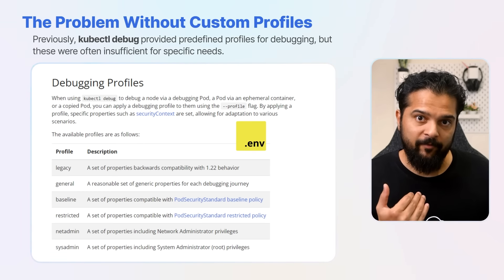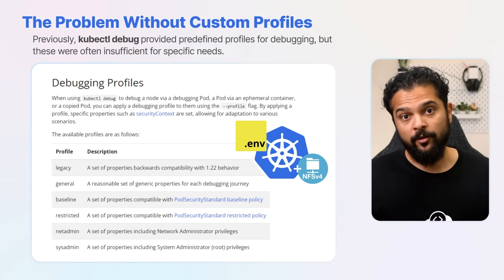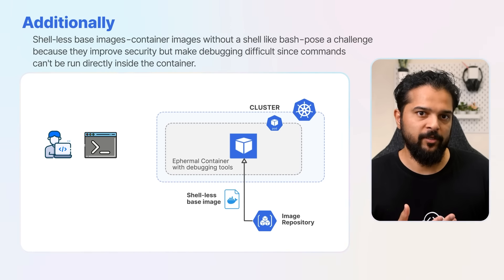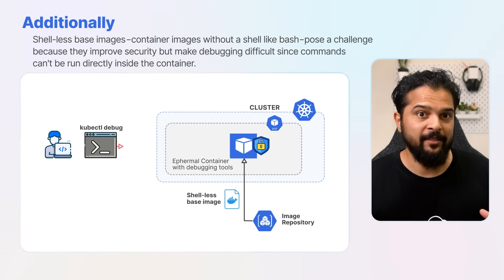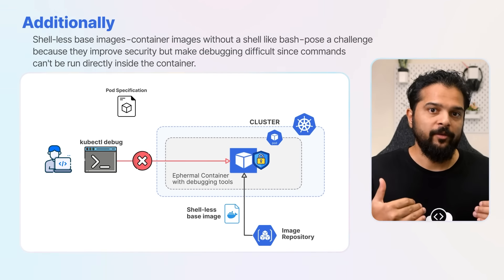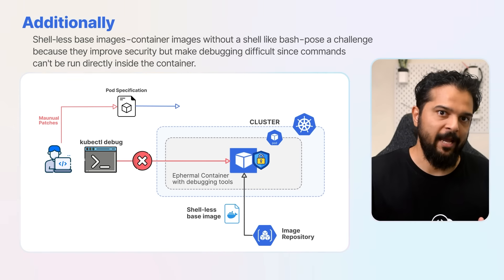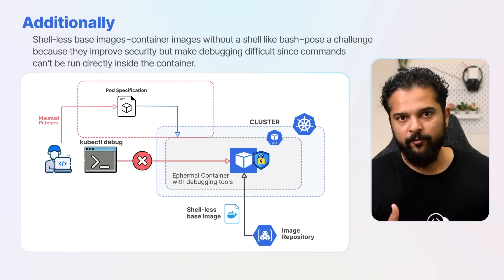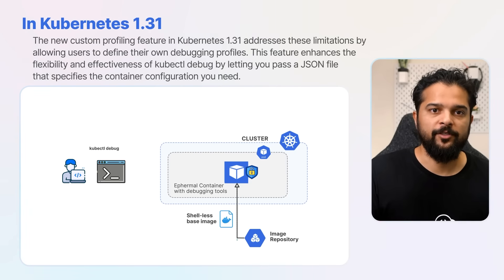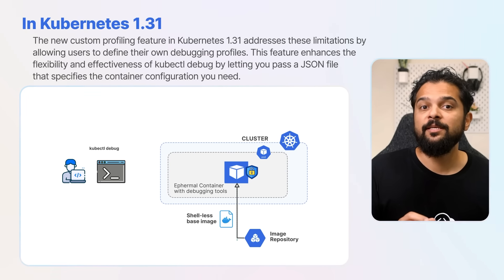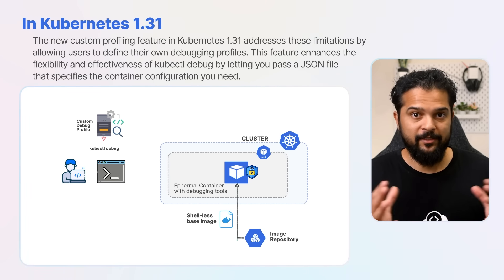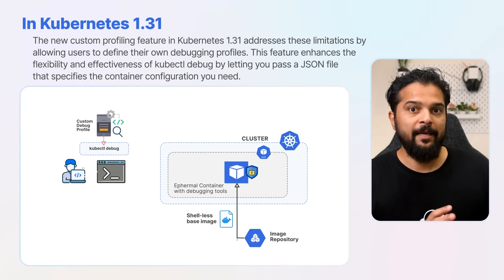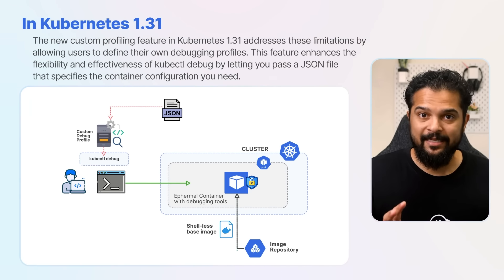Additionally, shell-less base images — container images without a shell like bash — pose a challenge because they improve security but make debugging difficult since commands can't be run directly inside the container. Without customizable profiles, users had to manually patch pod specifications, which was cumbersome. The new custom profiling feature in Kubernetes 1.31 addresses these limitations by allowing users to define their own debugging profiles. This enhances the flexibility of the kubectl debug command by letting you pass a JSON file that specifies the container configuration you need.